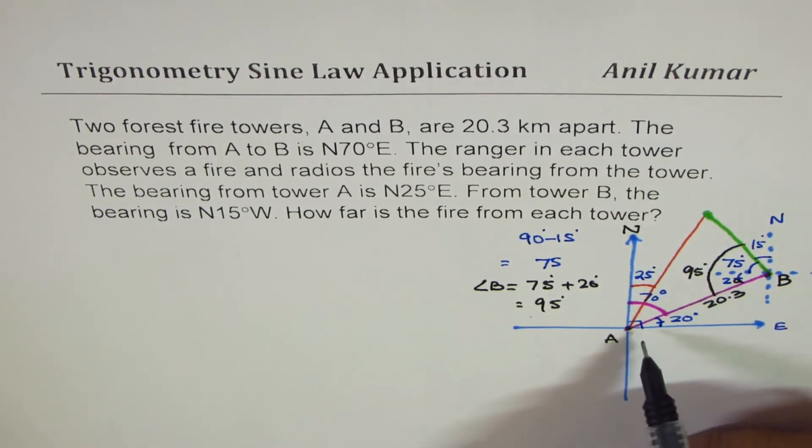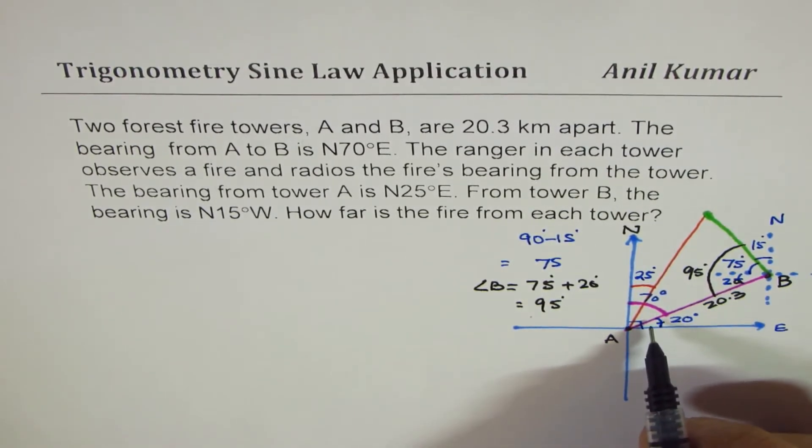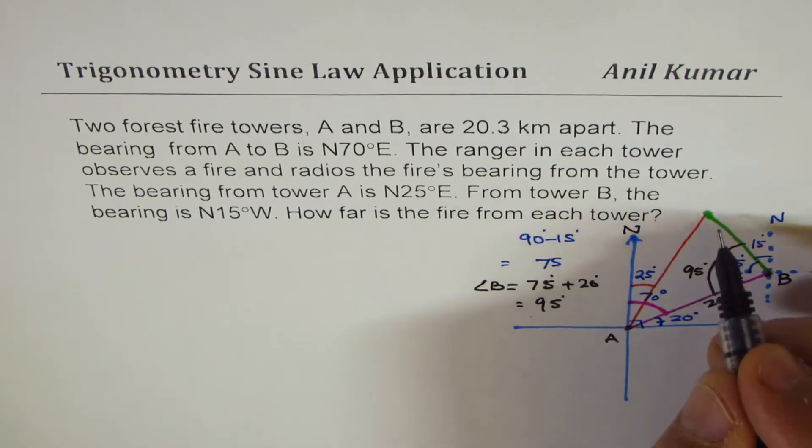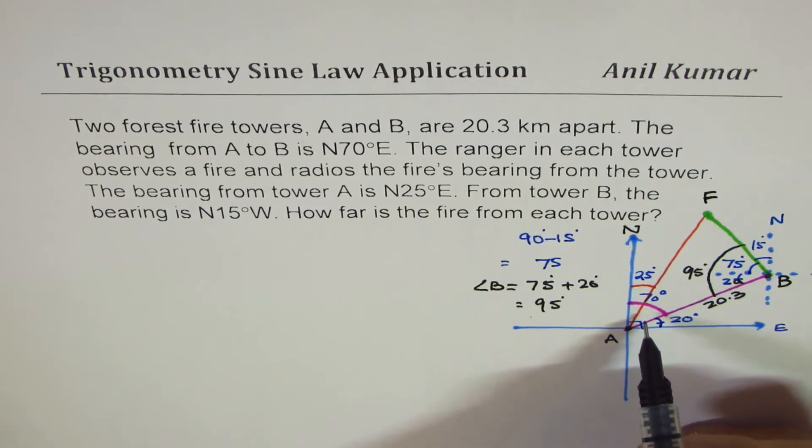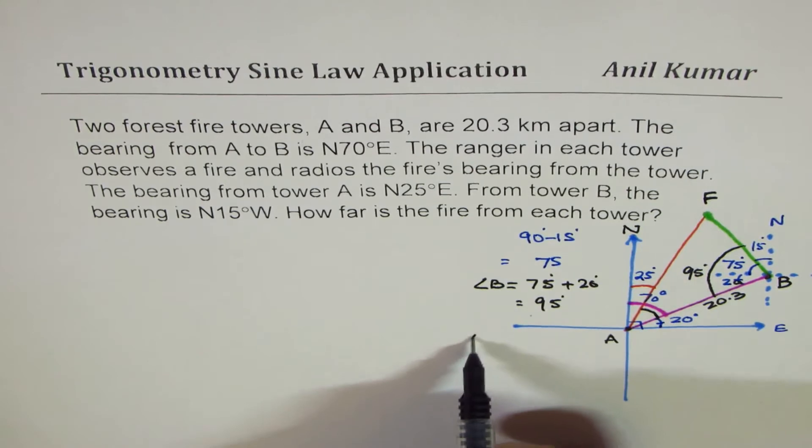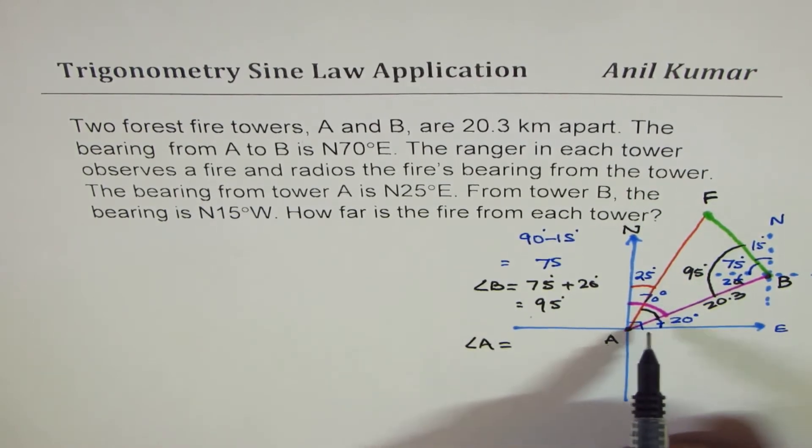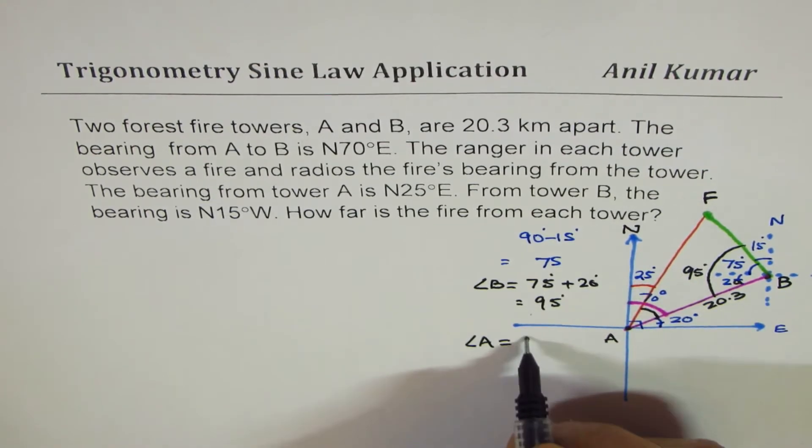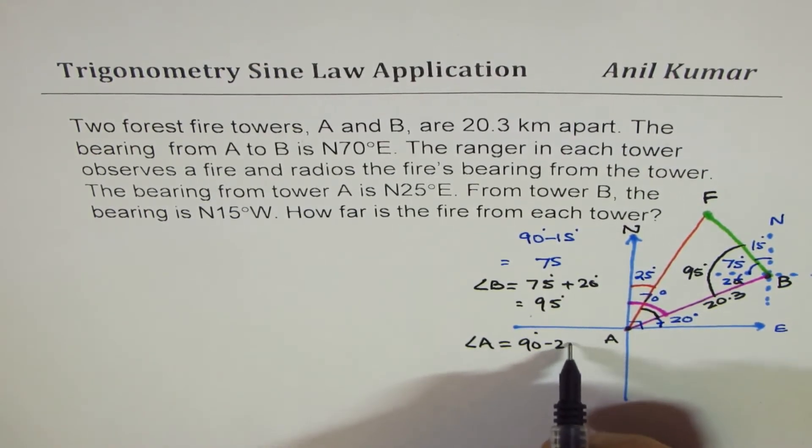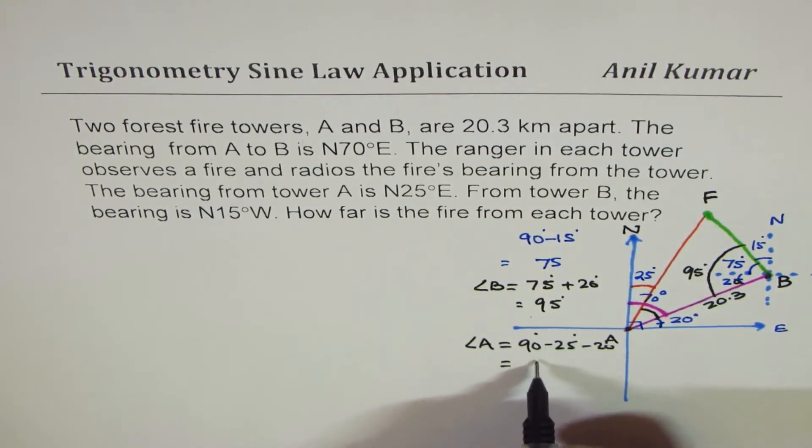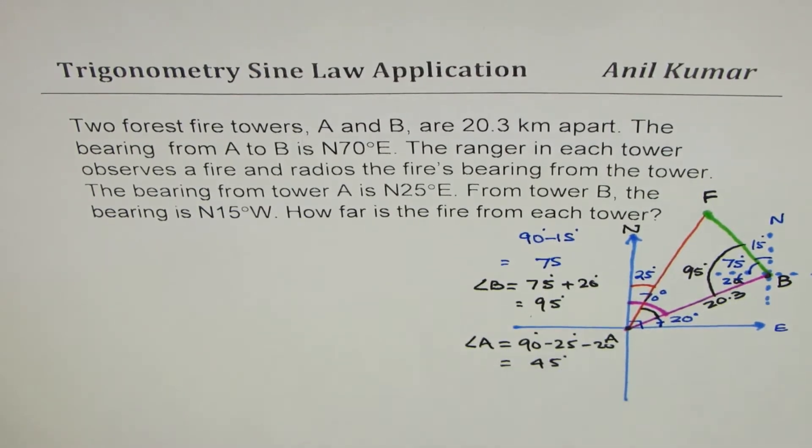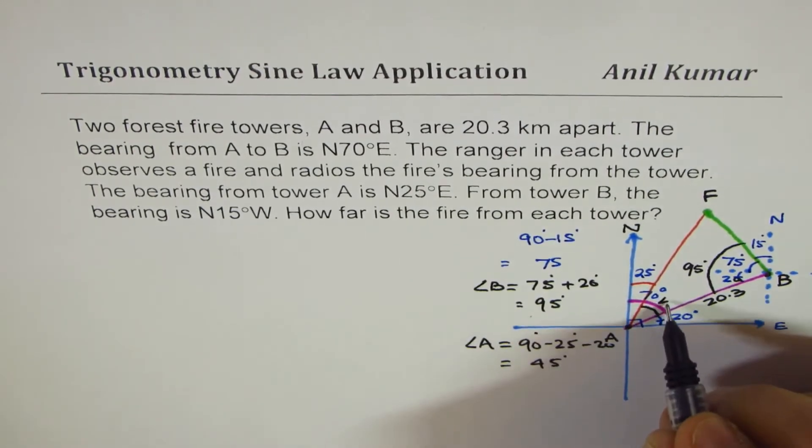We know one side. We can actually find the angle at A also for this triangle. Let me call that point as F, where the fire location is. So this angle here at A should be how much? Let's calculate. So angle A should be equal to, total is 90. So from 90, we take away 25 and 20. So let's take away 25 and 20 from 90. That is 45. So we are left with 45. So this is 45 degrees for us.